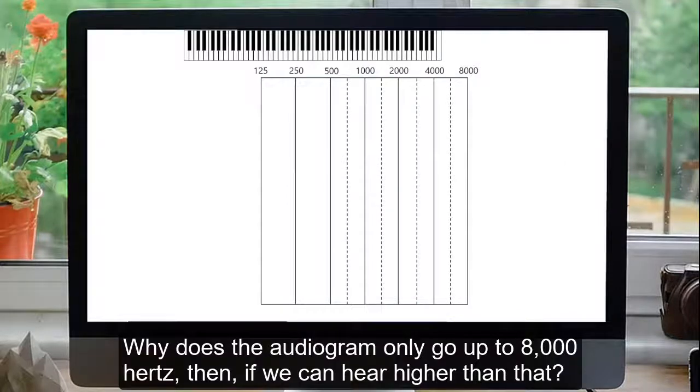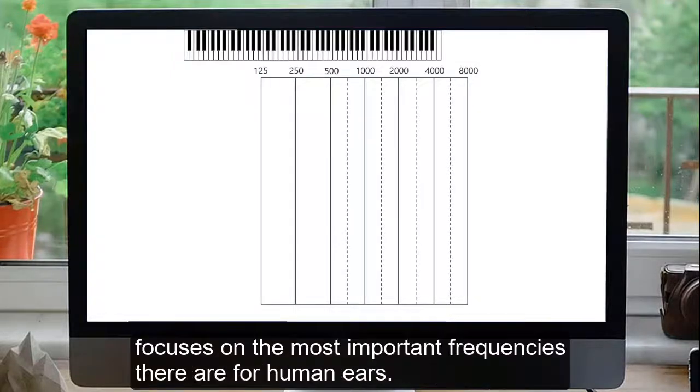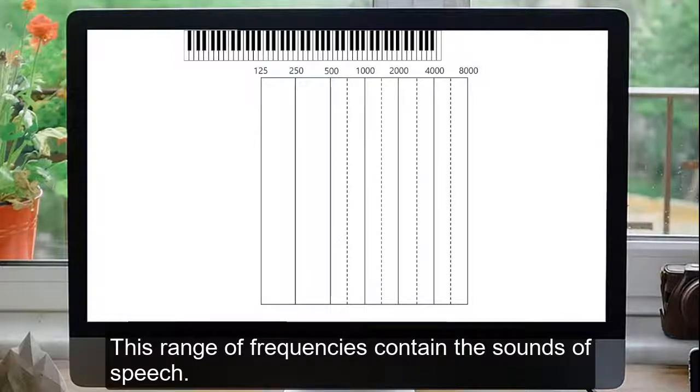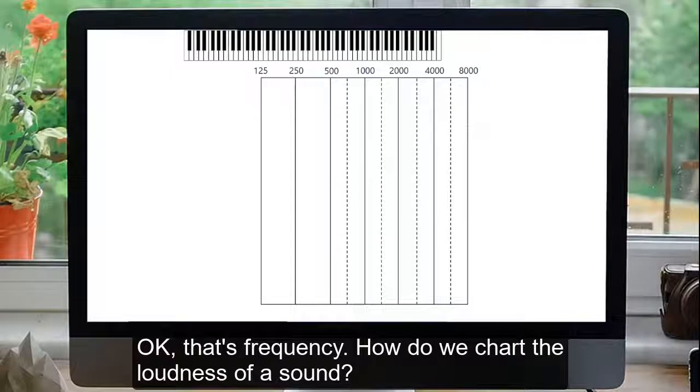Why does the audiogram only go up to 8,000 Hz then, if we can hear higher than that? It's because the audiogram focuses on the most important frequencies there are for human ears. This range of frequencies contain the sounds of speech.